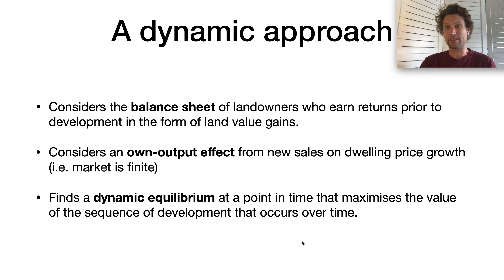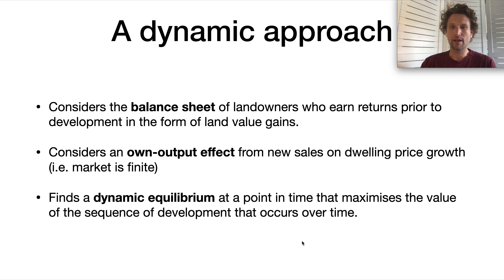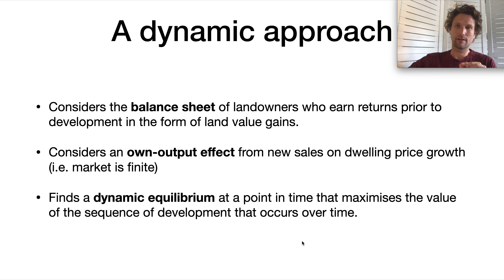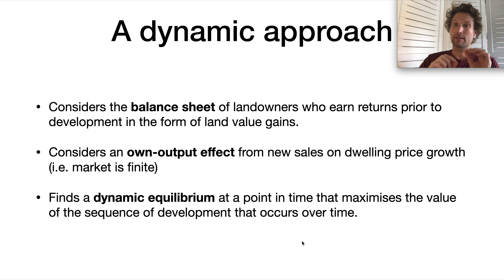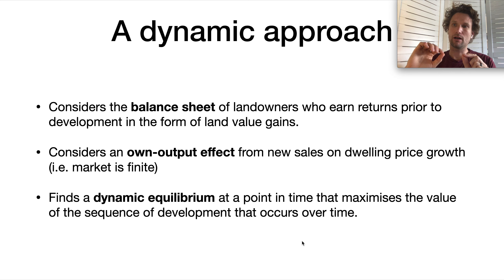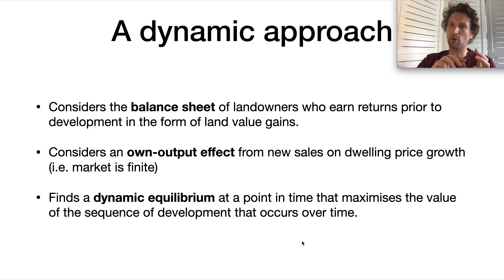Third, the way we solve the model involves a dynamic equilibrium. The difference between the dynamic and static equilibrium is that the dynamic equilibrium occurs only at a point in time — it's the rate of new dwelling sales that maximizes the value of the entire sequence of sales over time. Think of it as asking: is selling three dwellings a month for several months better than selling six per month and doubling the rate per period? That's what we mean by dynamic equilibrium.